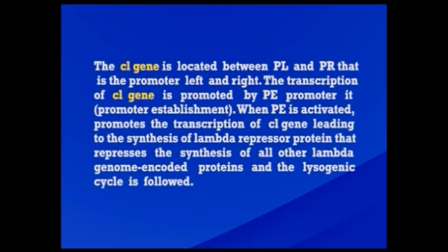The CI gene is located between the PL and PR — the promoter left and the promoter right. Transcription of the CI gene is promoted by PE, the promoter establishment. When PE is activated, it promotes the transcription of the CI gene, which leads to the synthesis of the lambda repressor protein that represses the synthesis of all other lambda genome-encoded proteins, and the lysogenic cycle is followed.